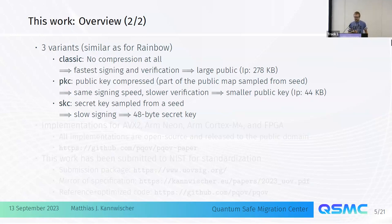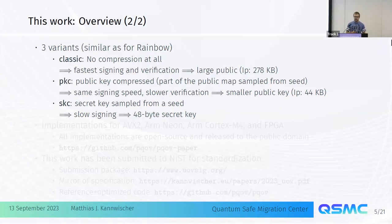That's why there are tricks to improve that — what's called public key compression. We call these parameter sets PKC, where some part of the public key is sampled from a seed. That gives the same signing speed but slower verification, and reduces public keys down to as small as 44 kilobytes. A third variant, SKC, also samples the secret key from a seed, giving very small secret keys, which is useful if you have very limited secure storage.